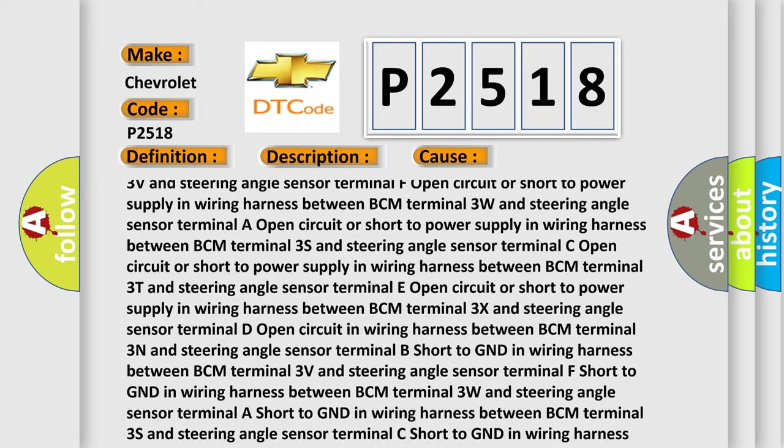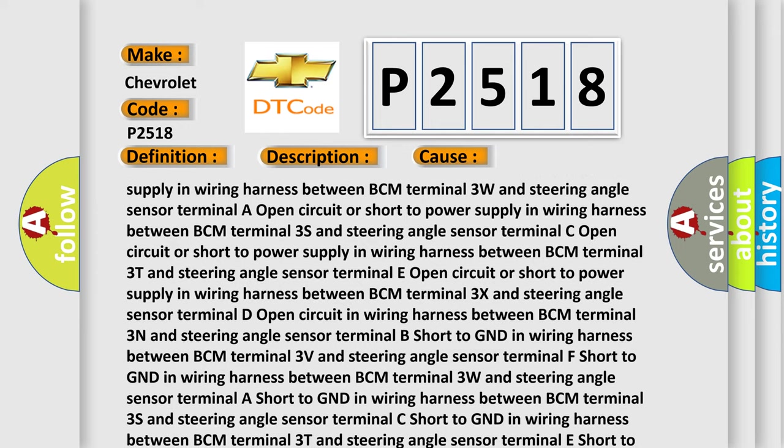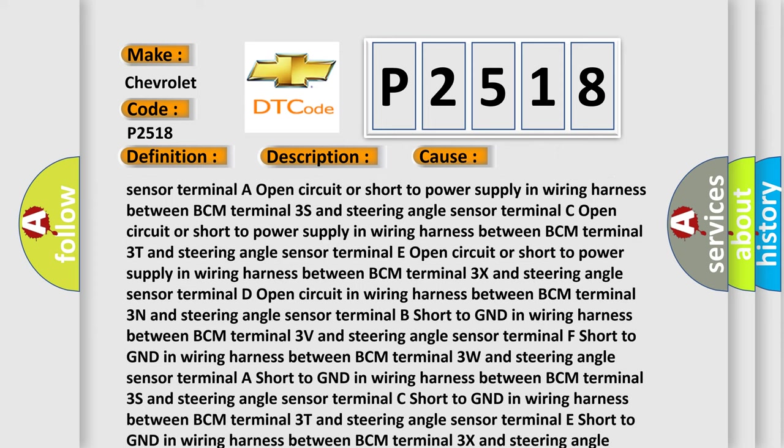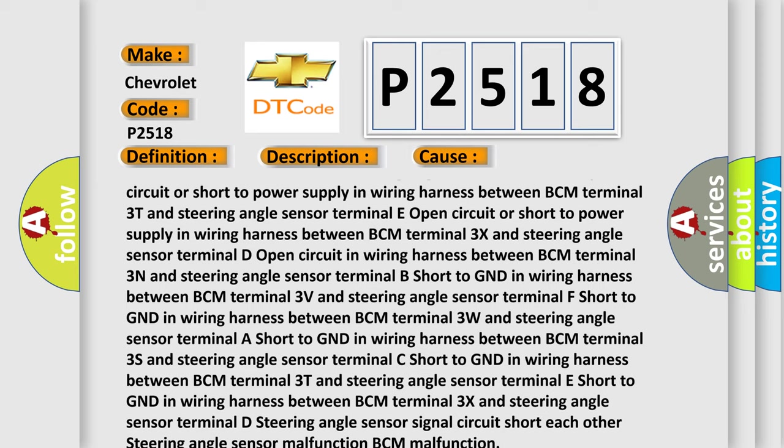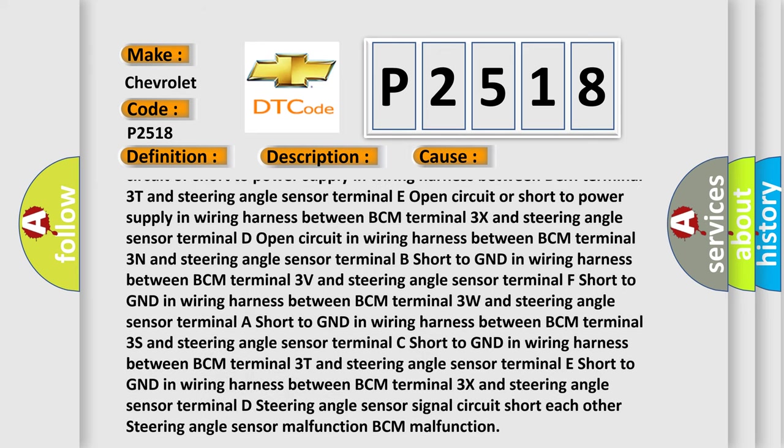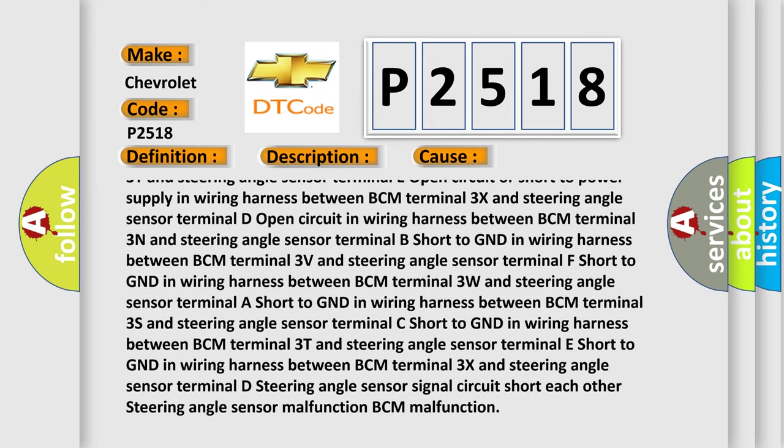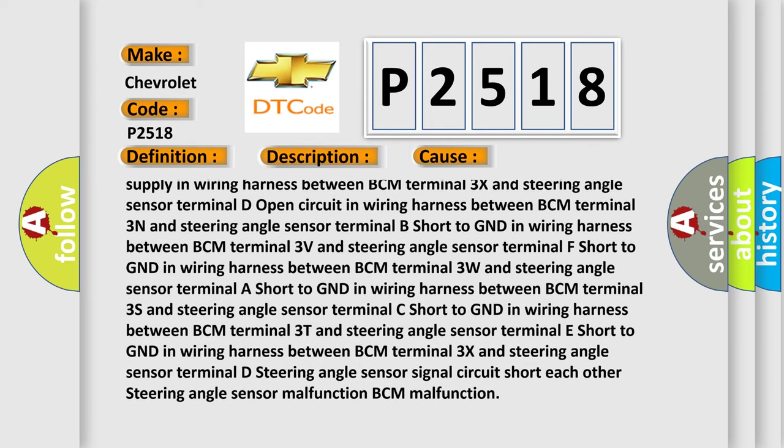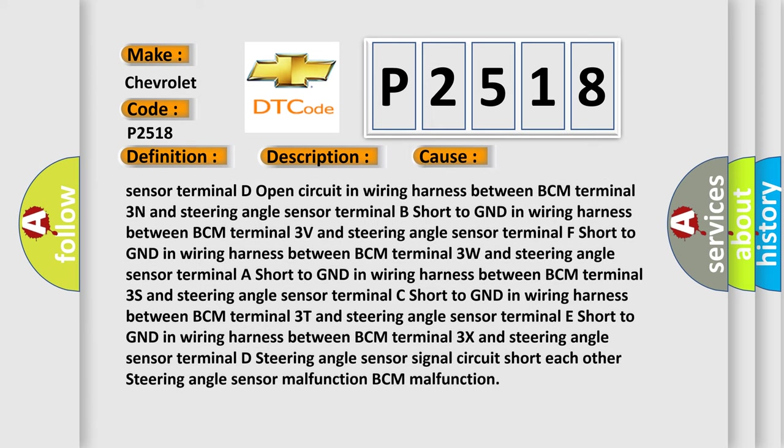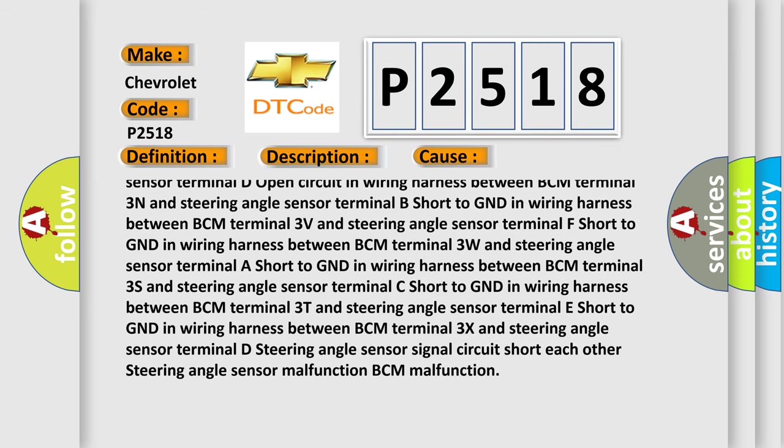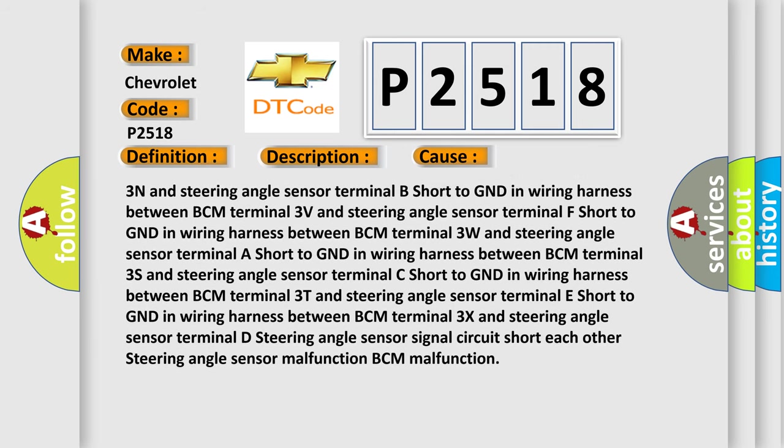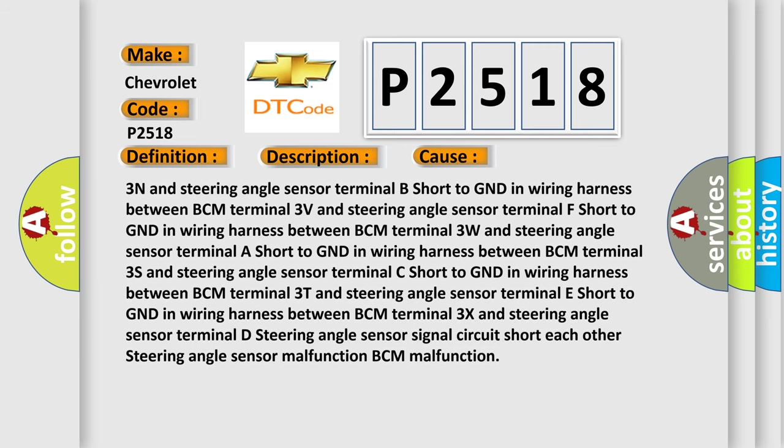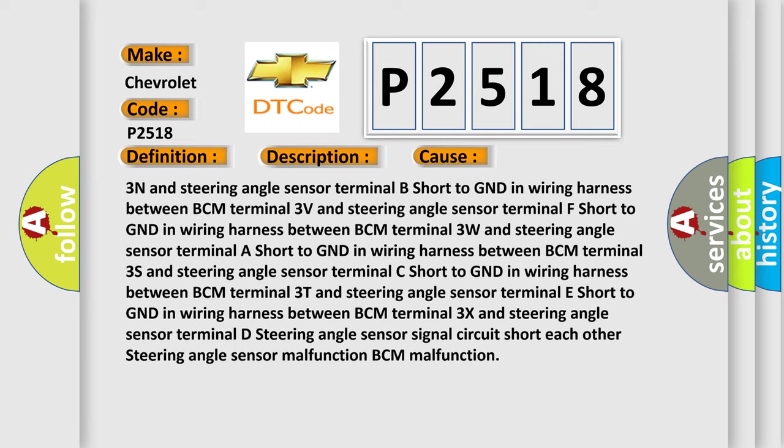Short to power supply in wiring harness between BCM terminal 3V and steering angle sensor terminals F, E, or D. Steering angle sensor signal circuit short to each other, steering angle sensor malfunction, BCM malfunction. The Airbag Reset website aims to provide information in 52 languages.